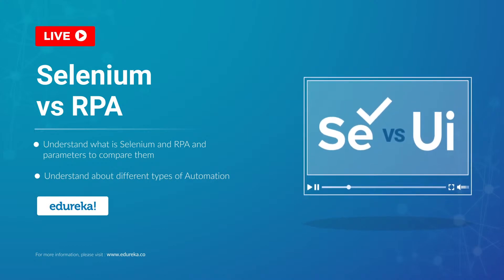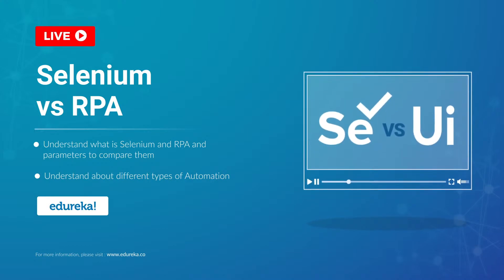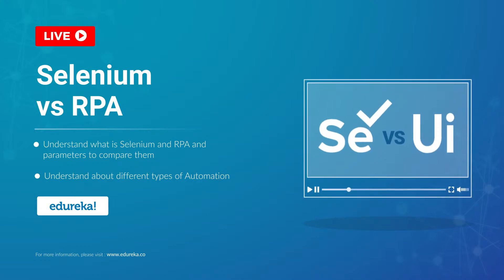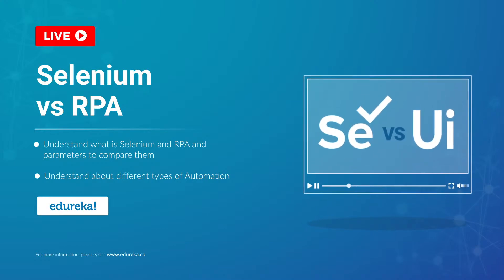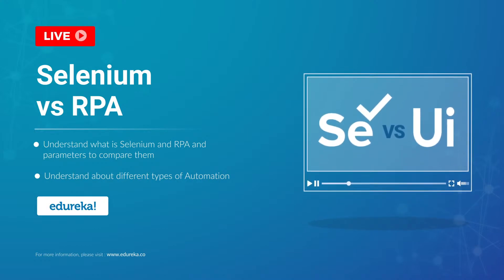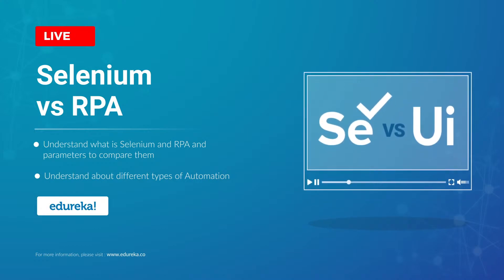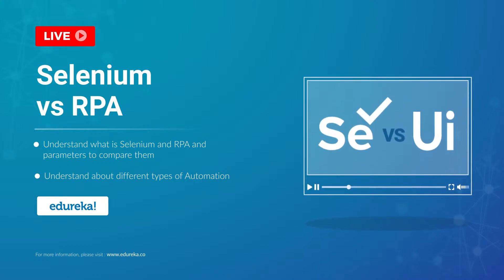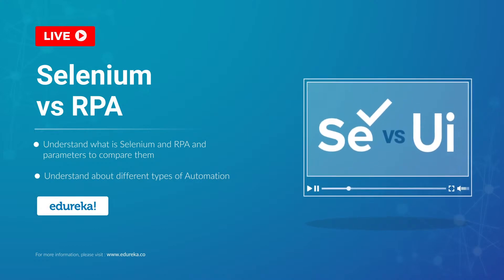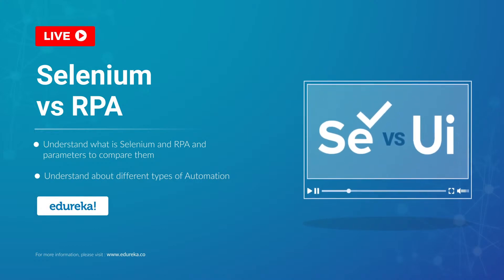That is robotic process automation and Selenium. You might wonder why are they of such great importance. Well, stick on to this video to find out what exactly are their features and how they differ from each other based on certain parameters.